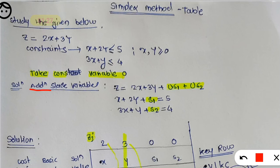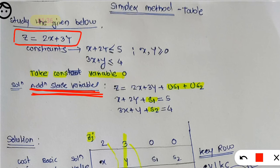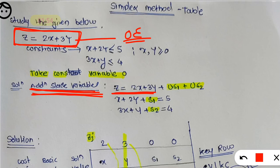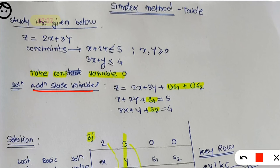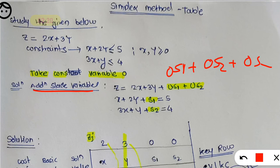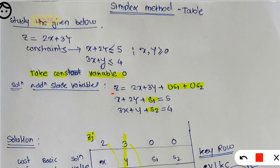In the very first step, you have to add the slack variables. The objective equation is z equals 2x plus 3y — given as is. We add slack variables with coefficient 0, so: z equals 2x plus 3y plus 0·s1 plus 0·s2. Since 0 into s1 is 0 and 0 into s2 is 0, there is no change in the equation.